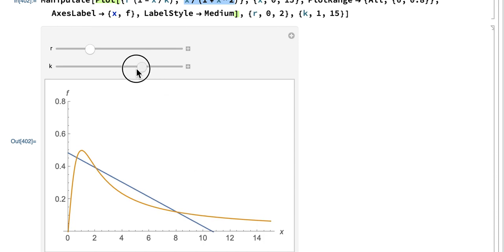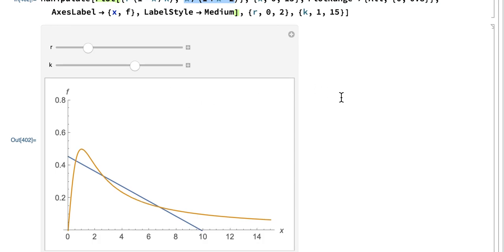And I might be interested in where in my parameter space, this R K parameter space, because I have two parameters right now, where I have bistability. It might be worth just kind of plotting that bistability region. And the way we do that is with something called a stability diagram.